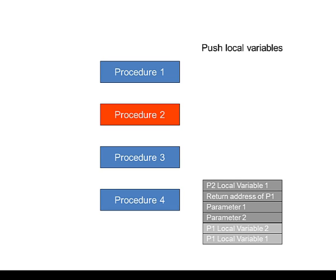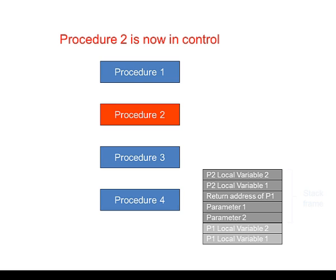Now that Procedure 2 is in control, any local variables declared inside Procedure 2 can be pushed onto the stack as well. So at this stage Procedure 2 is up and running, and it has what's called a stack frame. Procedure 2 can traverse this stack frame to get a hold of any data it needs.